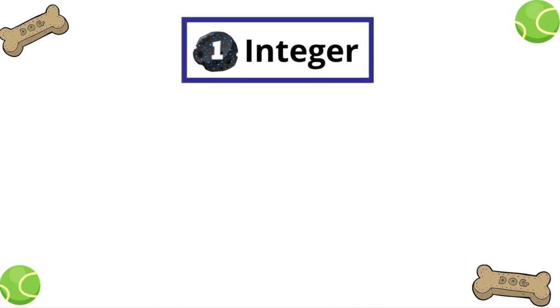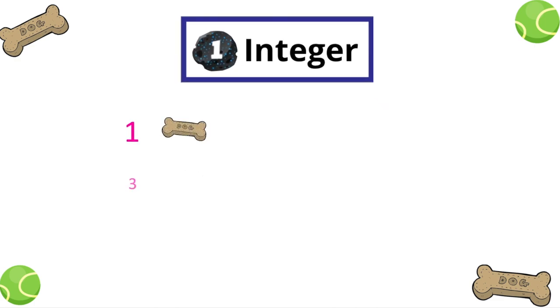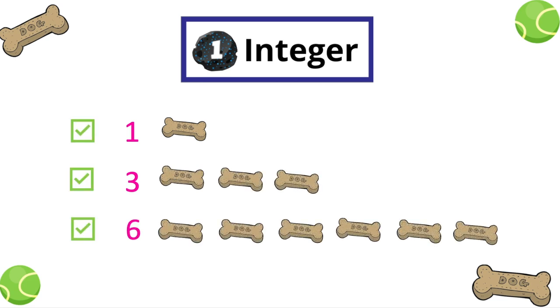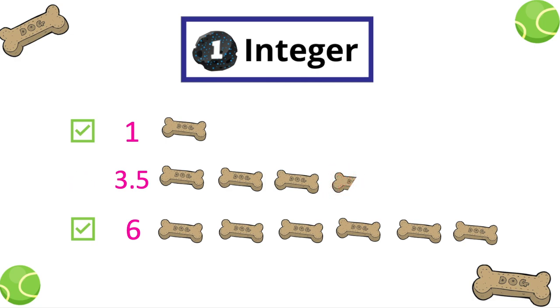An integer is just a whole number, like one, three, or six. If the number has any fractions or decimals, then it's not an integer. Integers are whole.